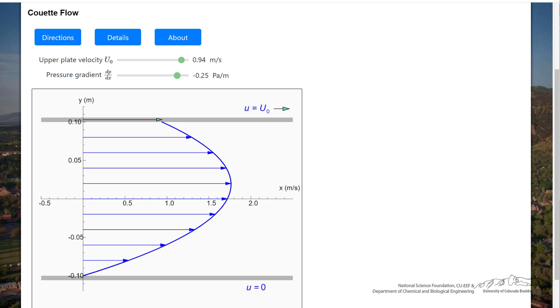Keep in mind there's no slip at the walls, and that the liquid velocity relative to the wall velocity is zero, and that this is laminar flow.